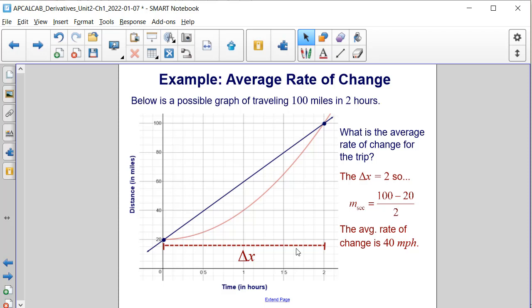Well, we can see that the change in x or delta x is 2. So that's going to be the number in our denominator. And then in the numerator, at 2 we are at 100 minus where we're at at 0, which is 20. And if we do the subtraction, we get 80 divided by 2, which is 40. So the average rate of change is 40 miles per hour.